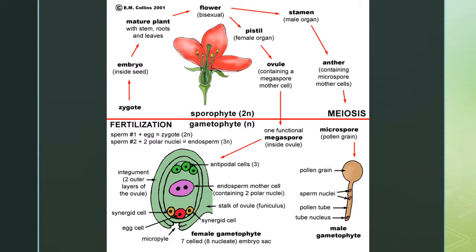Let's start at the embryo, which is inside the seed. It germinates, and once it reaches maturity we have flowers. Remember we have male and female parts to the flower. The female organ is the pistil, which contains the ovule, and within the ovule is the megaspore.